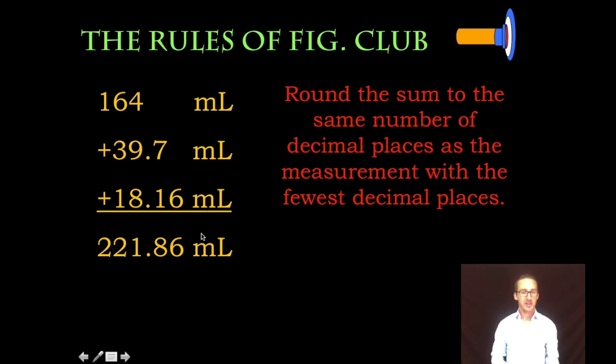How is it possible to be this precise, precise to the hundredths place, when one of our measurements was only precise to the ones place? The only way we can make this measurement to the hundreds place is if each of these measurements were also to the hundreds place.